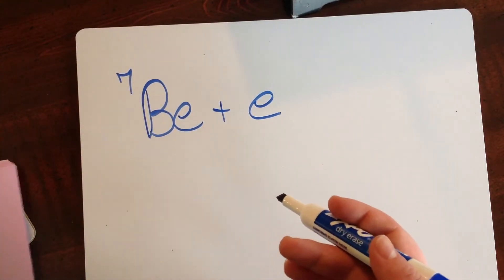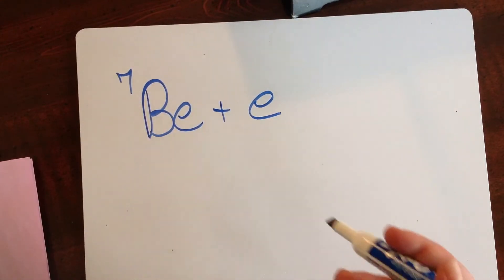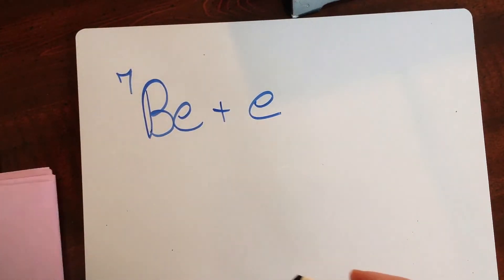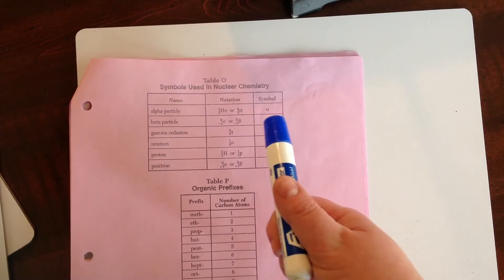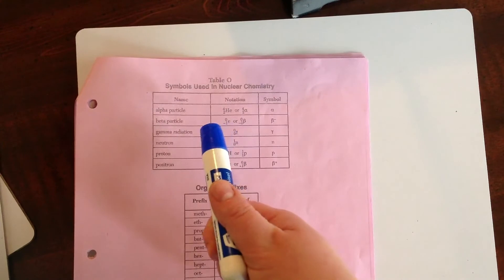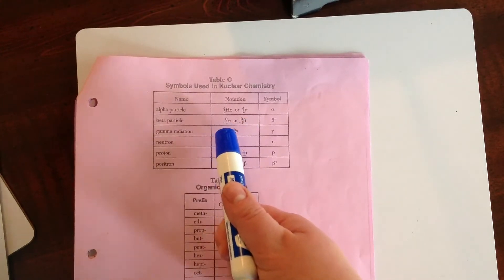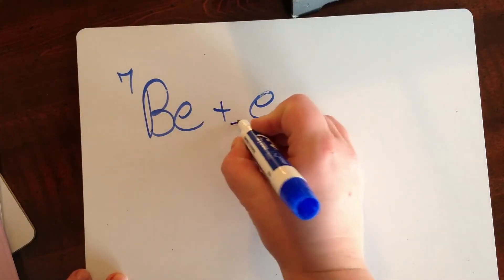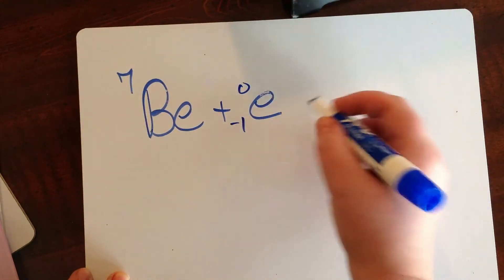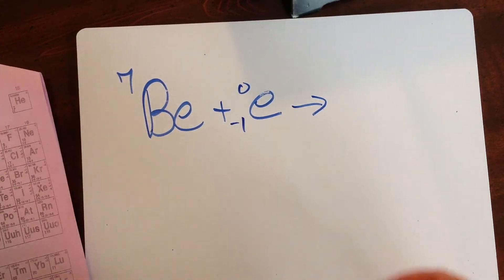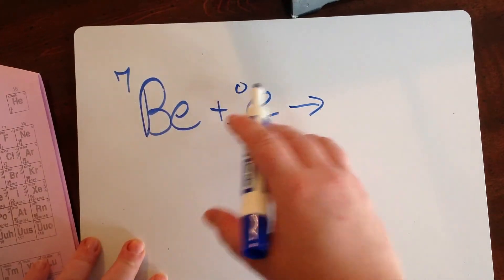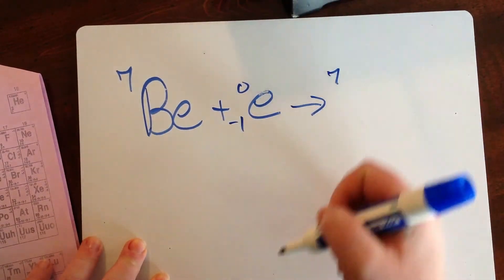If we look on table O, again, it gives us the symbol for the electron is essentially the beta particle. So it's the same symbol with a negative 1 on the bottom for the charge, a 0 on the top for the mass. And then we're going to do the exact same thing with beryllium with the superscripts on the left and the right. 7 plus 0 equals 7.